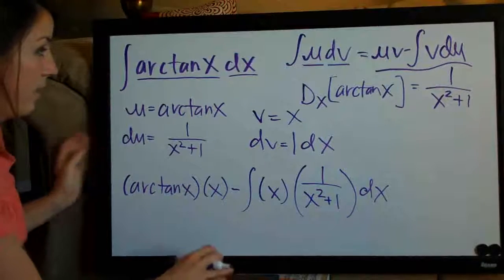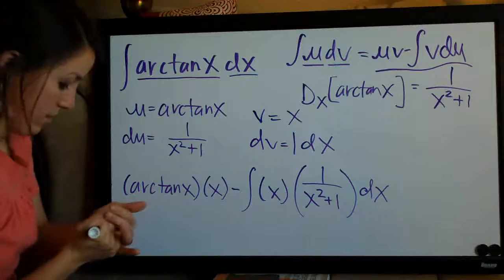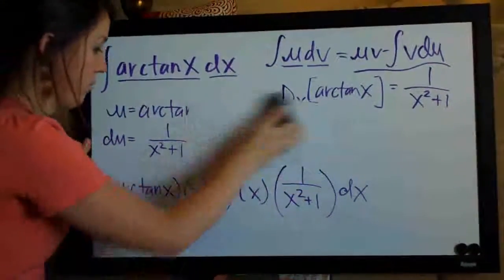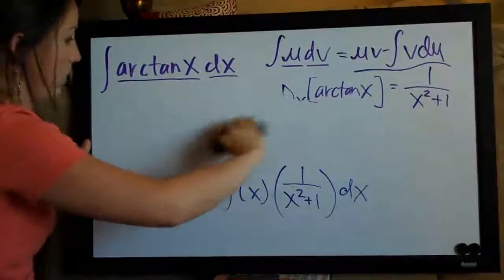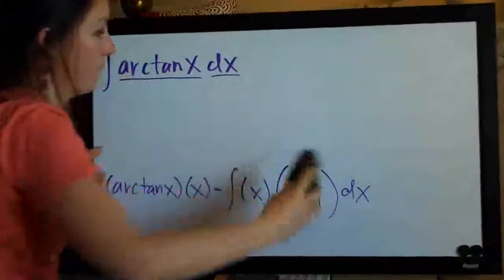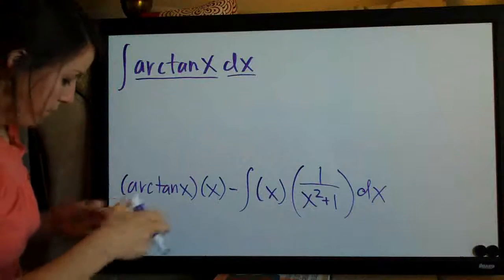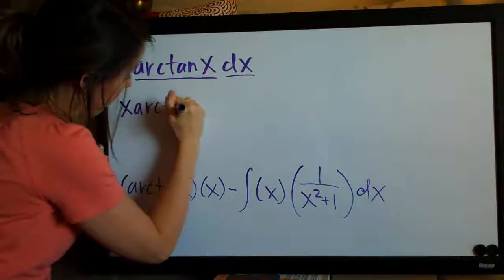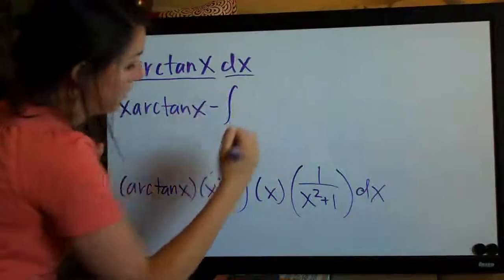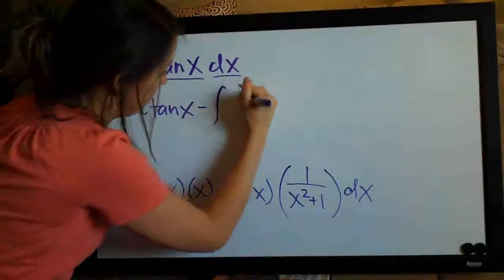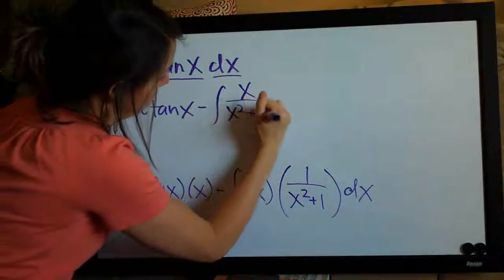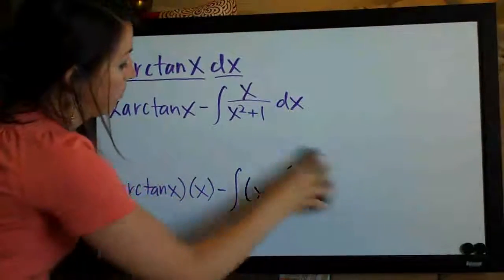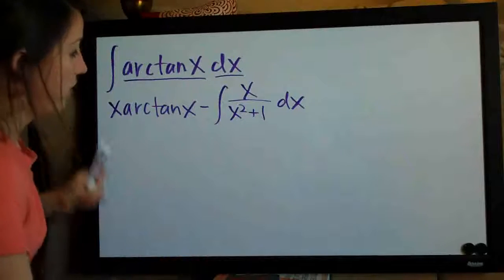So let's go ahead and simplify this. Simplifying this, we'll move the x in front: x arctan of x minus the integral of x over x squared plus 1 dx. So there's our problem after we've used integration by parts.